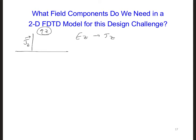This would be Jz, co-located with an Ez component. So Ez is one of the components that we need in our two-dimensional grid. What about the others?